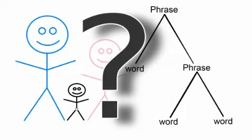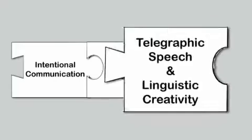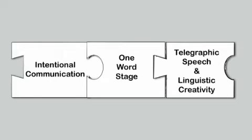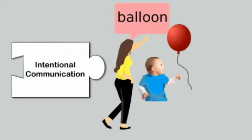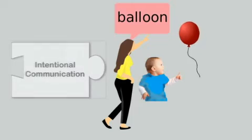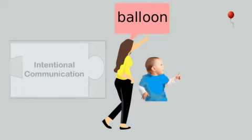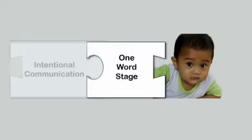How well does nativism account for the puzzle pieces of language development introduced in video one of this series? UG does not explain why nonverbal intentional communication — with its hallmark behaviors of pointing and other gestures — is such an important step in developing language.